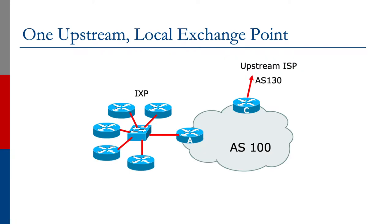If we look at the diagram, we now see AS100. Router A is connecting to an Ethernet switch at the Internet Exchange Point, and there are several other networks present there. Router C is connecting to AS130, the upstream provider.